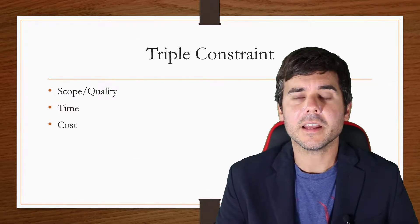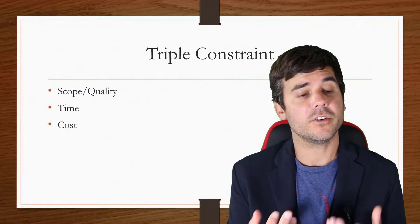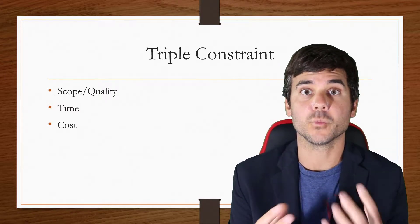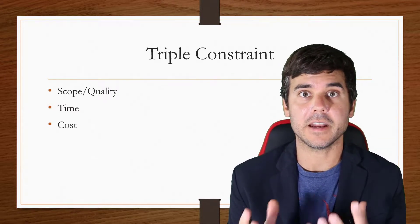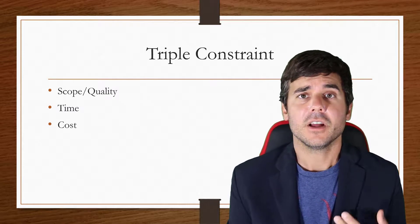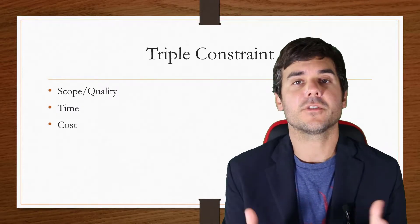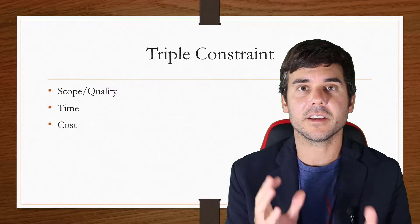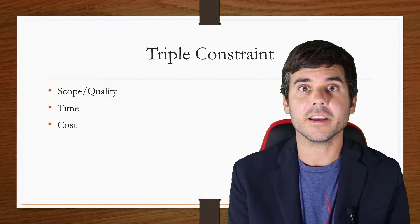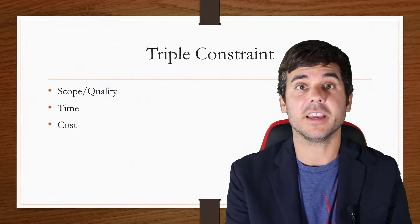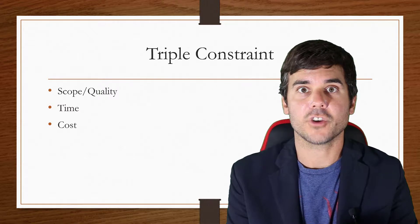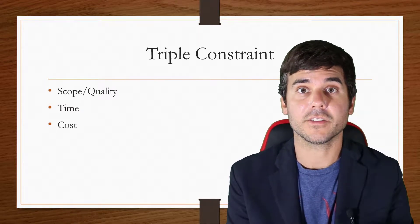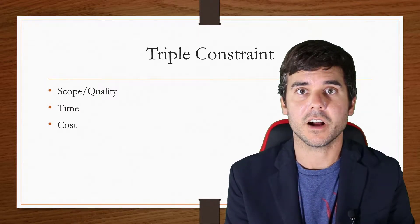If they tell me they don't want to spend a lot of money, I know that could significantly decrease the quality. All three of these things are really interconnected with each other. During the first meeting I have with a client — usually the first 30 to 60 minutes while they're talking — in my head I'm thinking of the scope and quality of the project, how long it's going to take, and how much it's going to cost.